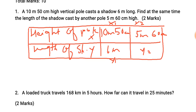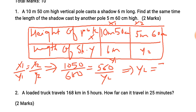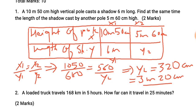This is a case of direct proportion, so the formula is x1 upon y1 is equal to x2 upon y2. So, 10 meter 50 centimeter means 1050 centimeters upon 600 centimeters is equal to 560 upon y2. If we cross multiply and solve it, then y2 will be equal to 320 centimeters. This is your final answer.